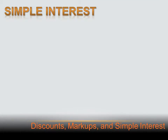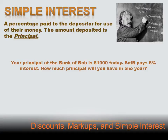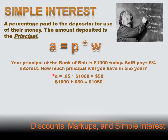Simple interest. If you go to the bank and deposit money, the bank pays you interest because they're going to use your money to make more money. Let's say your principal at the Bank of Bob was $1,000 today, and B of B pays 5% interest. Using the percent equation, A — the dollar amount of interest you earn — equals 0.05 times the principal of $1,000, which equals $50. That $50 is just the interest. You keep your $1,000 and the $50 interest, so after a year you have $1,050 in the bank.